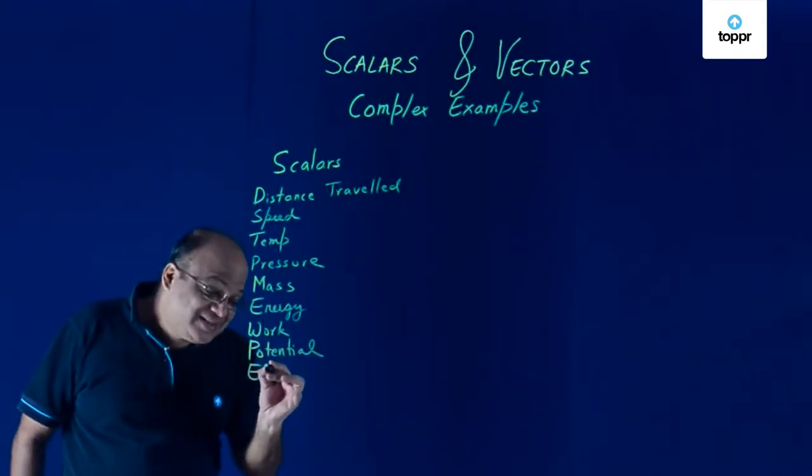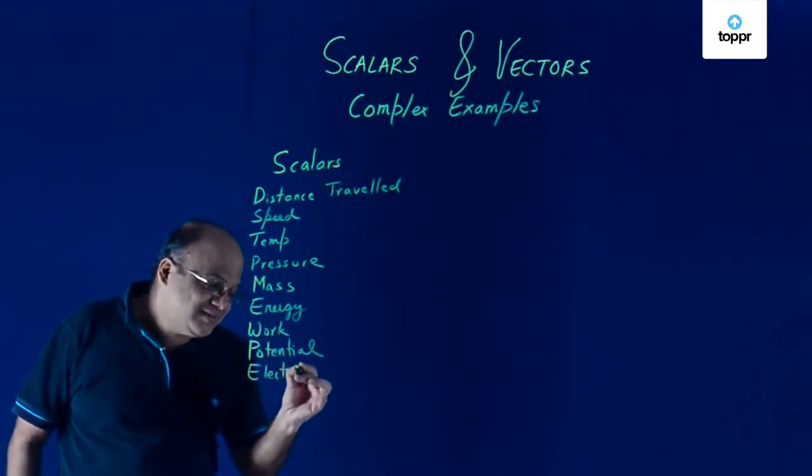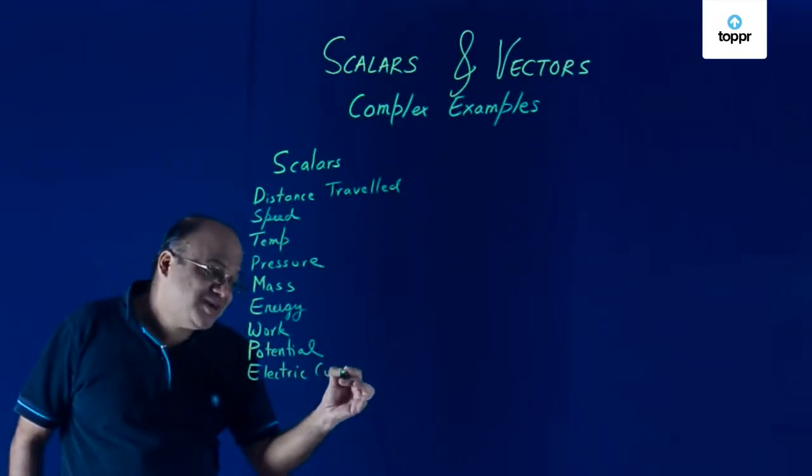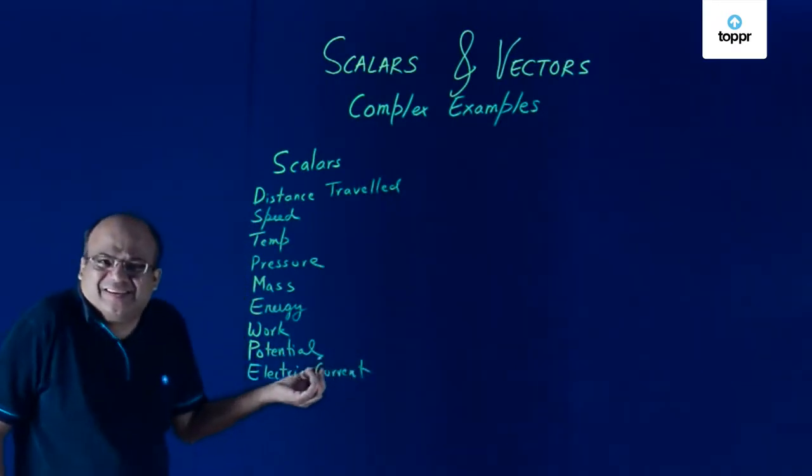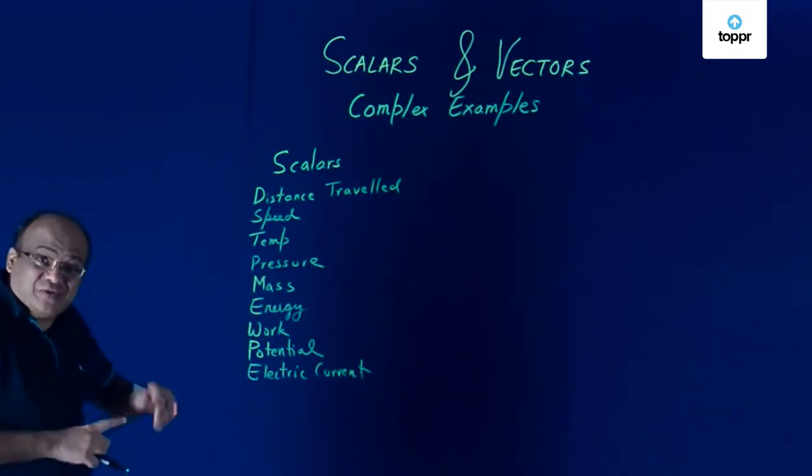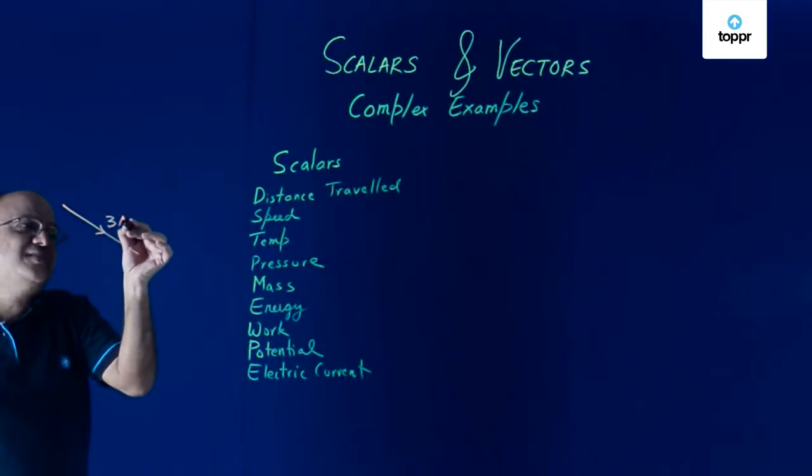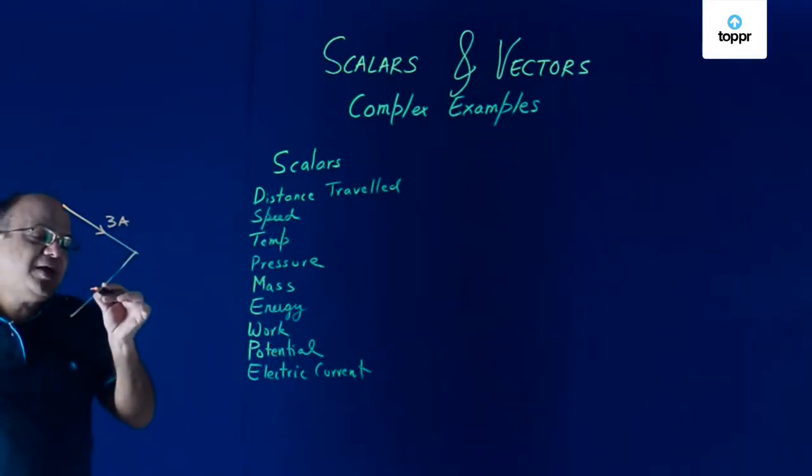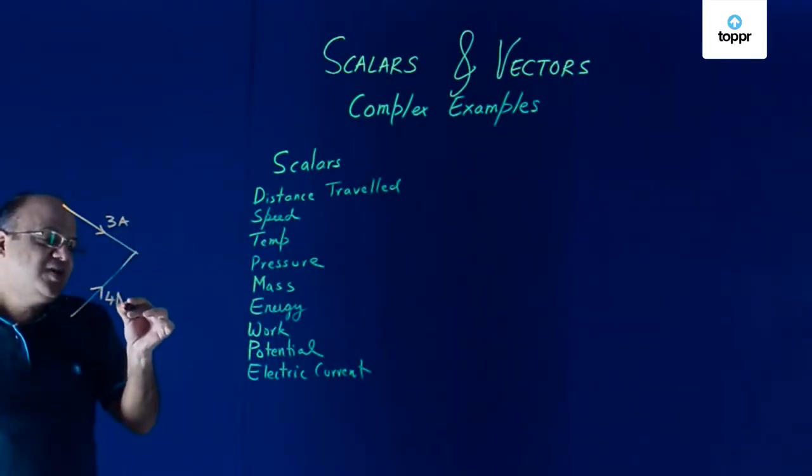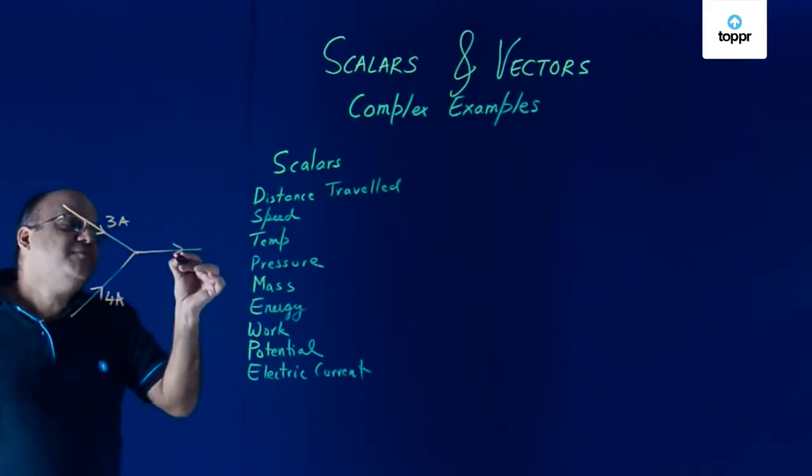Electric current is a scalar. Some of you may start thinking how electric current is a scalar. Right? We give arrow to the flow of current, but if a current of 3 ampere is going like this and a current of 4 ampere is going like this, always we get 7 ampere.